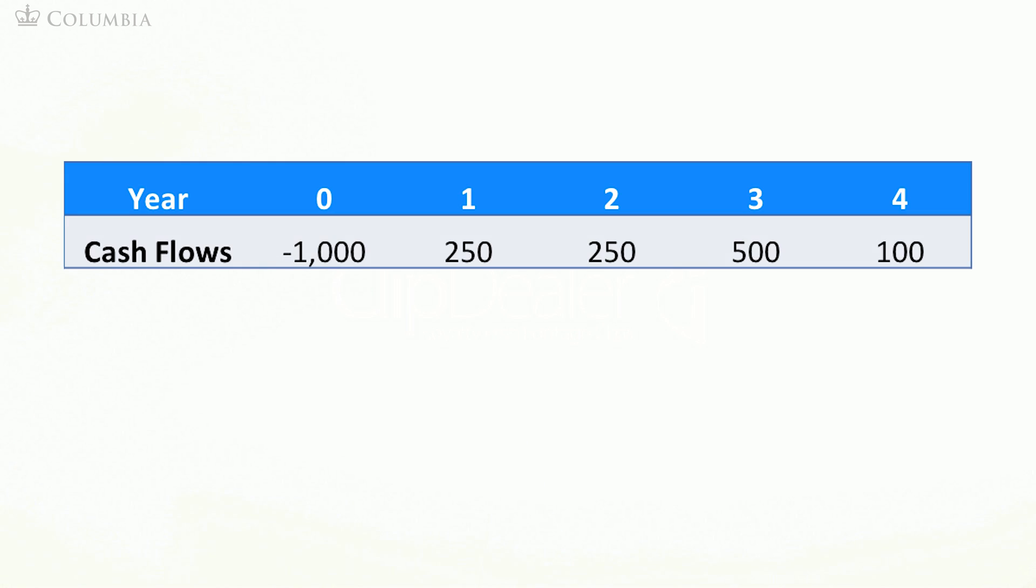For example, consider a project with cash flows as shown in this table. The initial investment is 1,000, and the project generates cash flows of 250, 250, 500, and 100.